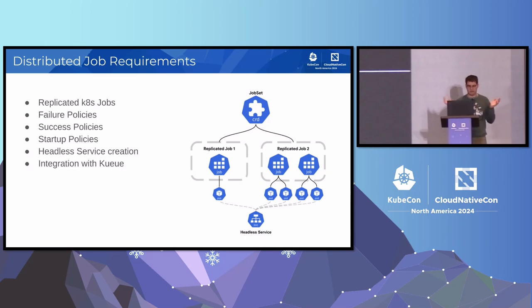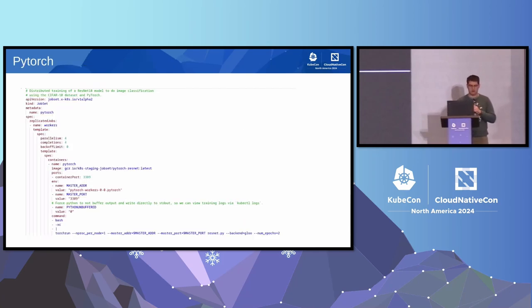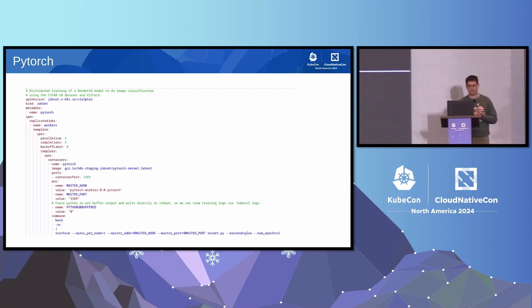JobSet solves all the use cases we mentioned about a distributed job. We wanted all these feature requests in JobSet and allow building on top of it. Our first use case was: can we represent a PyTorch job pretty simply? This is a simple example but it actually works. If you try to do this with the job API without the headless service, it won't work because you can't communicate with your pods. That was the first test - can we run a simple PyTorch job?